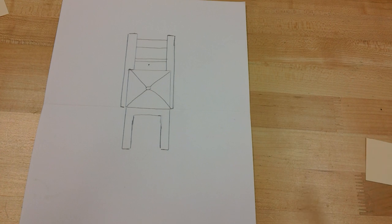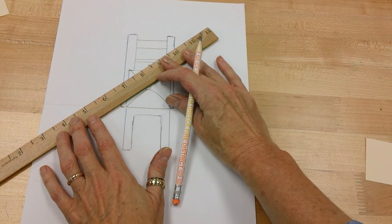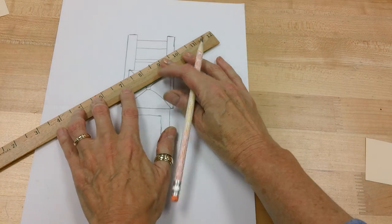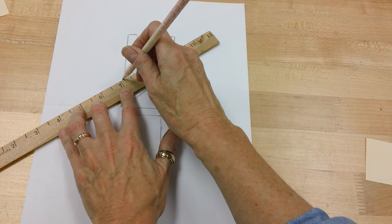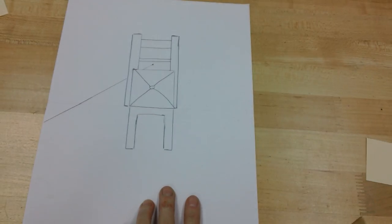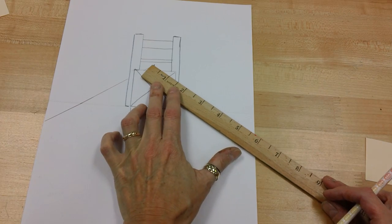I'm going to take my ruler now and make a very wide V. So here, that's one side, and then I'm going to match that out here on this side. Now, one thing you can do—I did it pretty evenly—but I can also make sure that I make that stop at the same point.